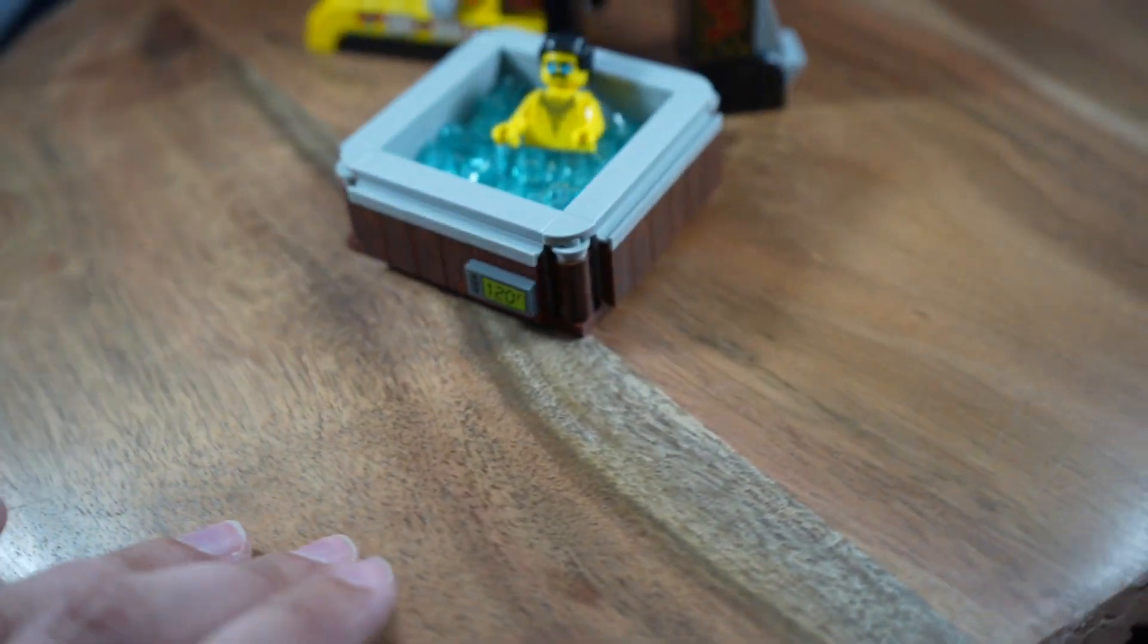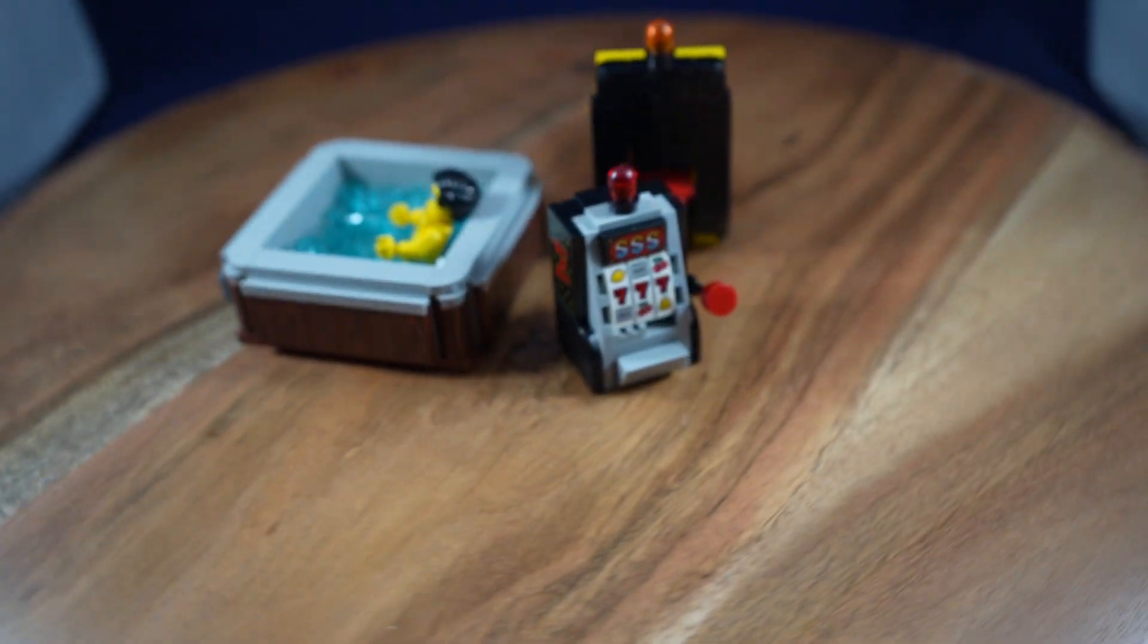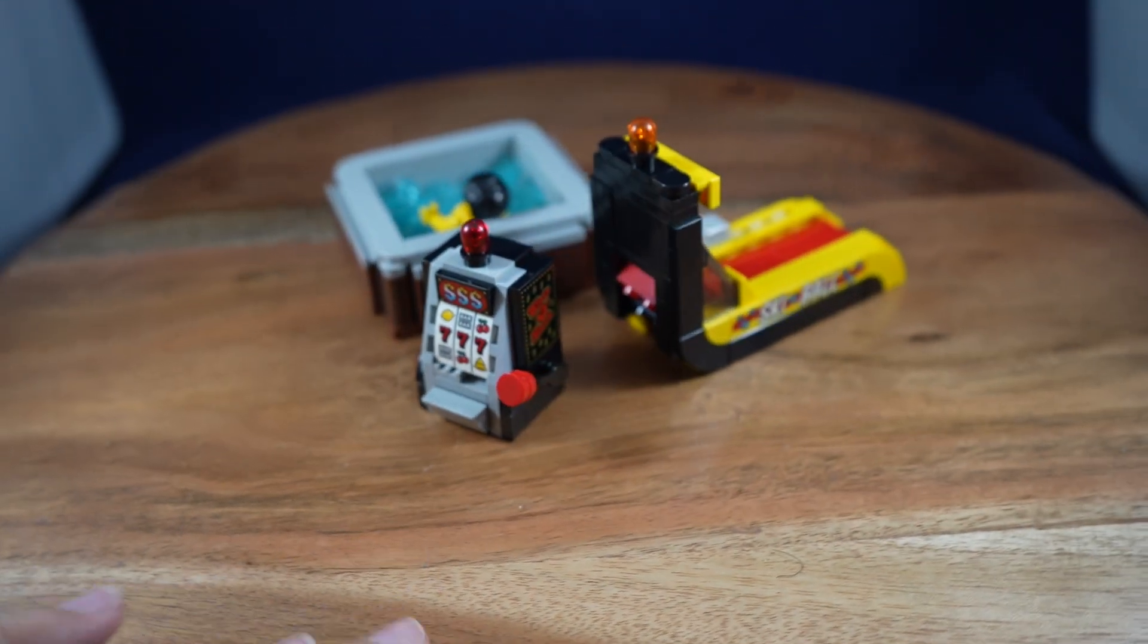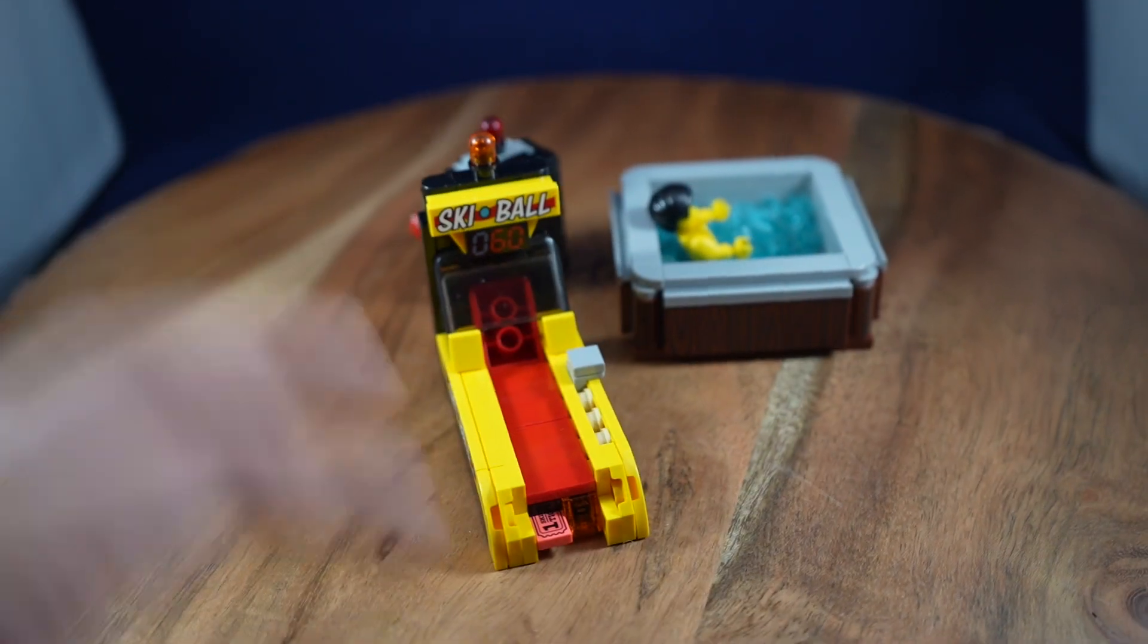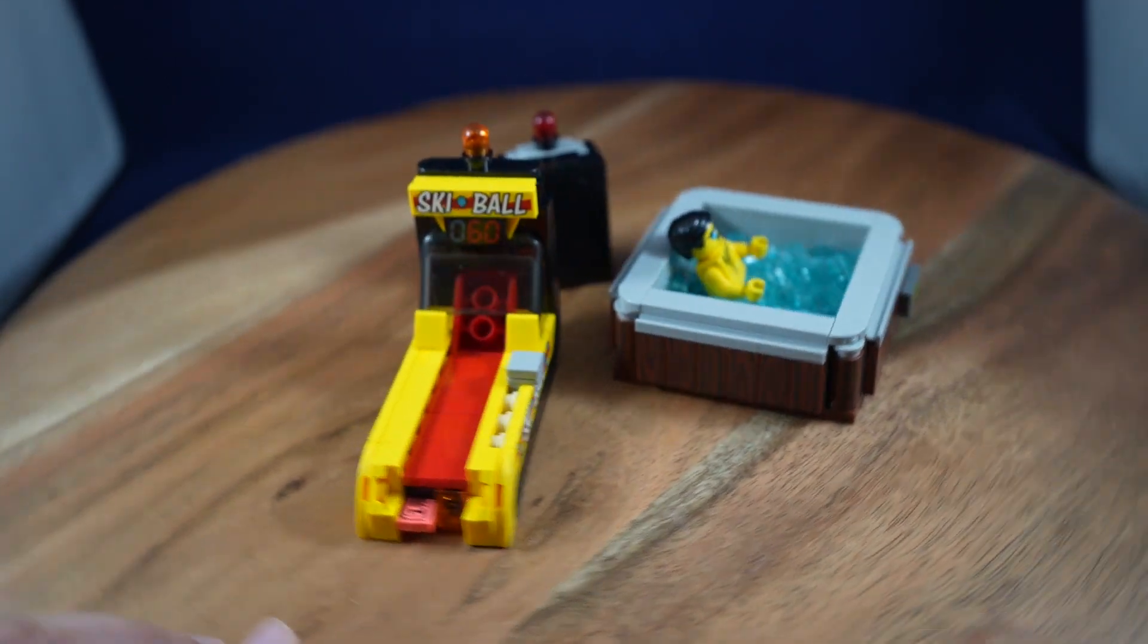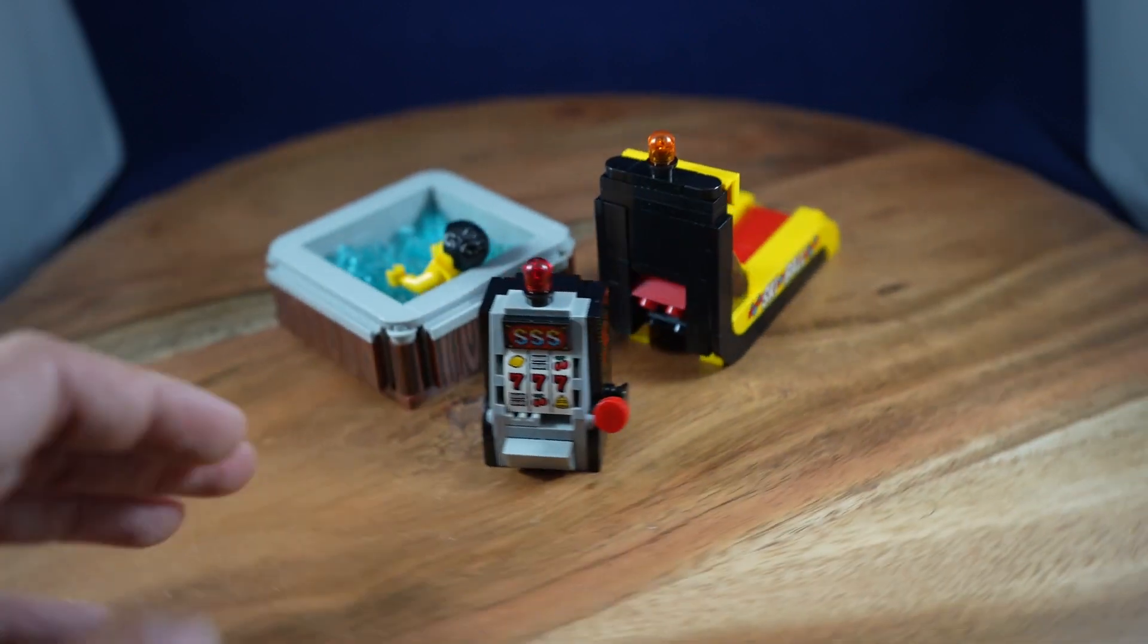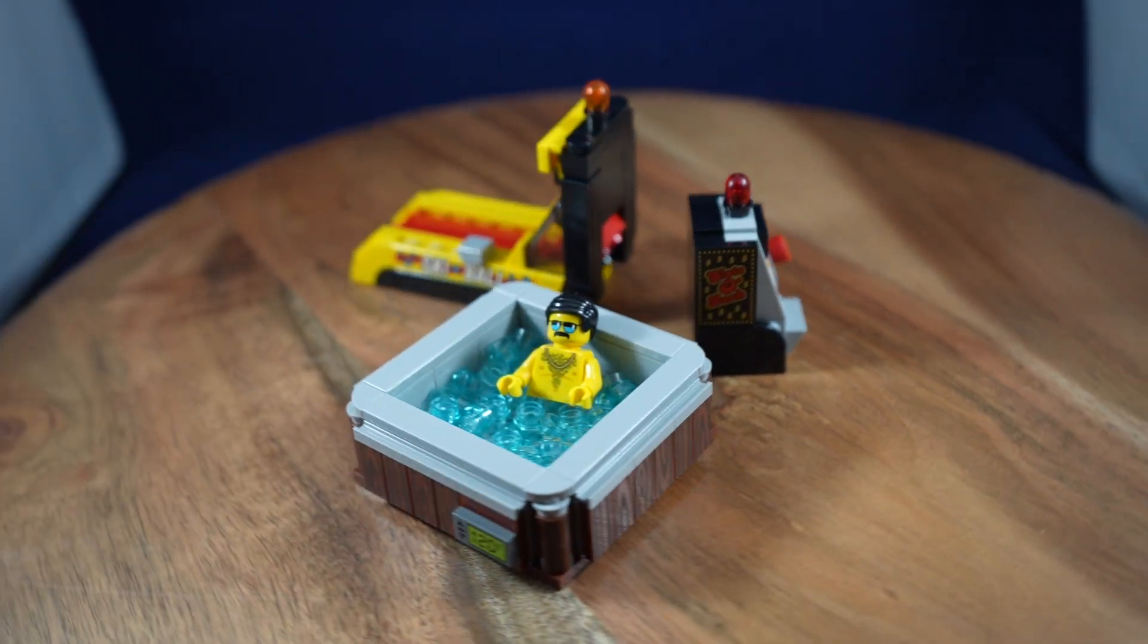And with all the sets together, what an interesting assortment of builds. You know they're all kind of real life objects but don't necessarily 100% fit together. I think the slot machine and the skeeball machine are kind of the same ballpark but the hot tub is a little bit out there.